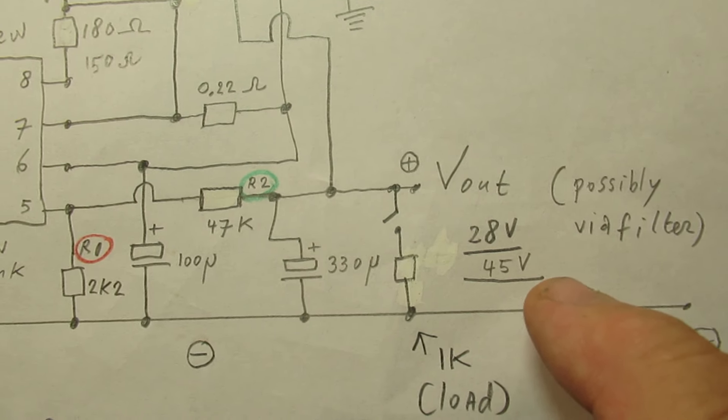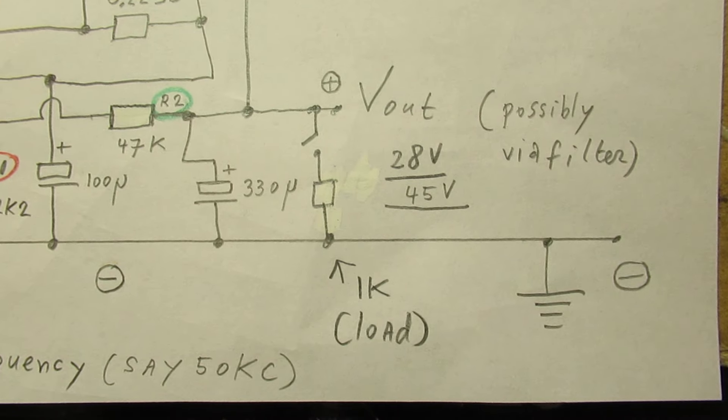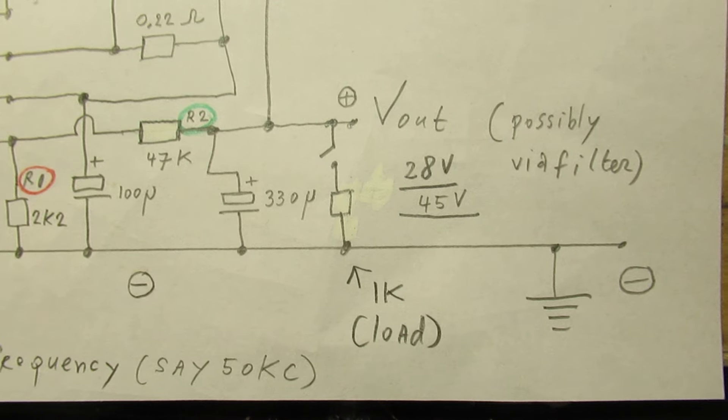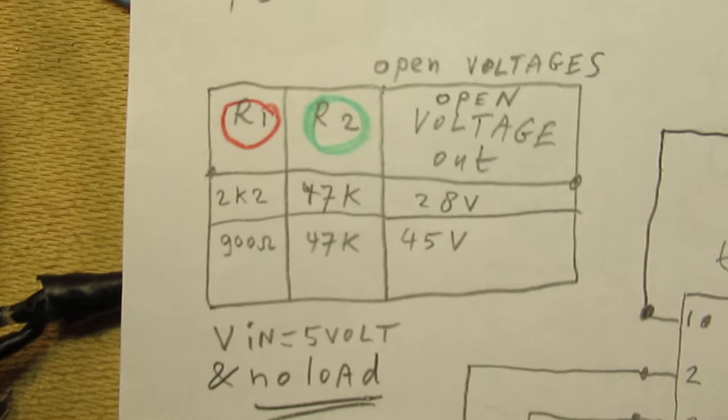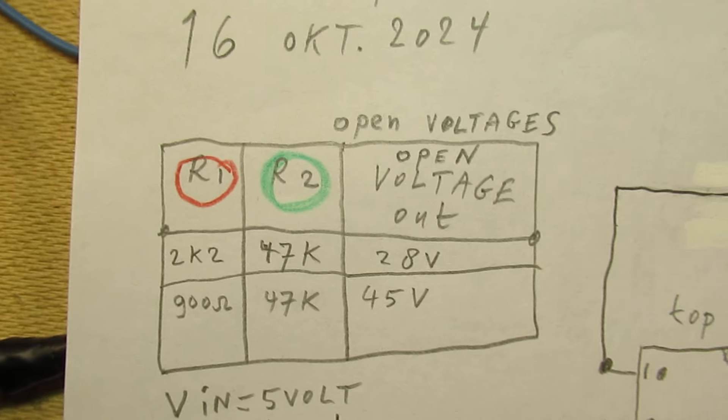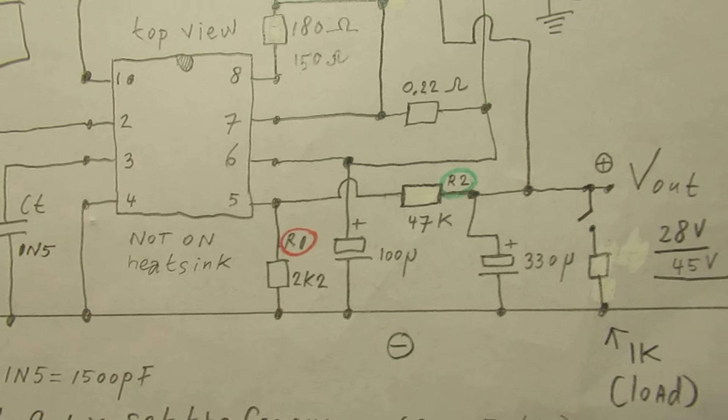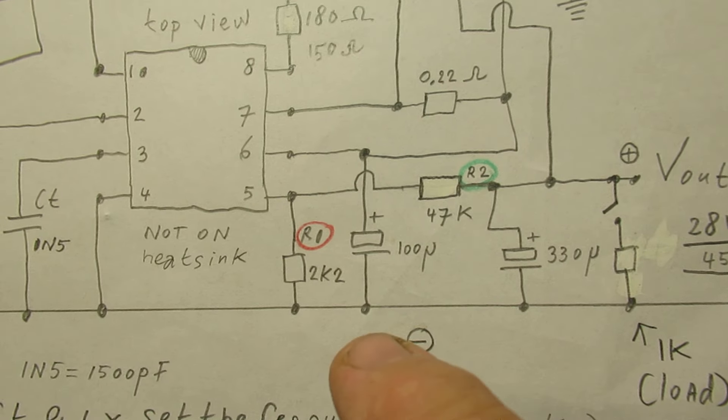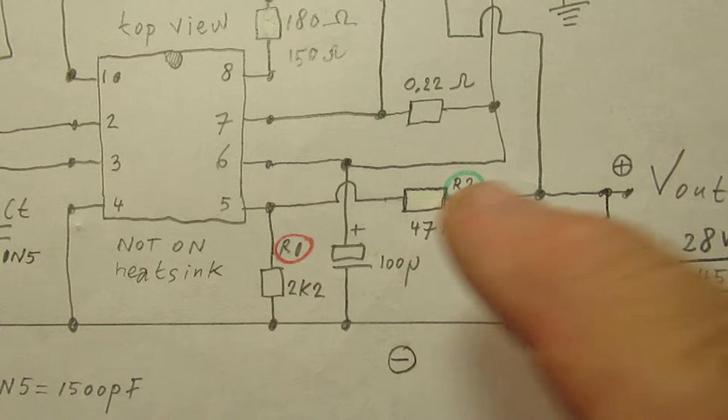So with no load, when this switch is open, we can go to 28 volts without a load and 45 volts without a load. With a load of 1 kilo ohm, that is 1000 ohms, we also have a substantial higher output voltage.